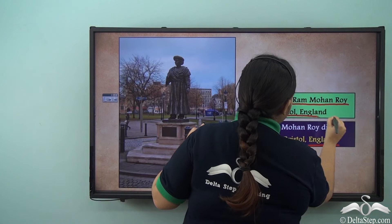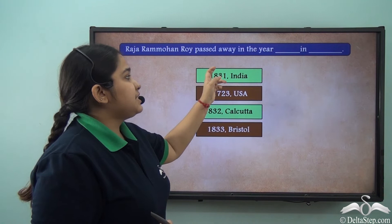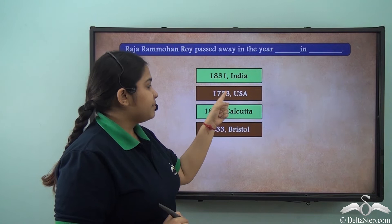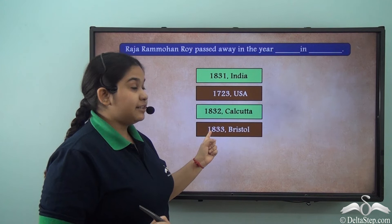Raja Ram Mohan Roy passed away in which year and where? Was it 1831 in India, 1723 in the USA, 1832 in Calcutta, or 1833 in Bristol? The answer is 1833 in Bristol.